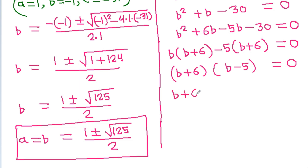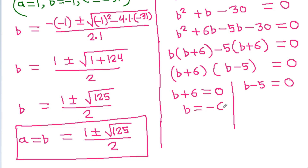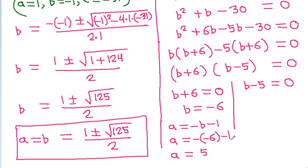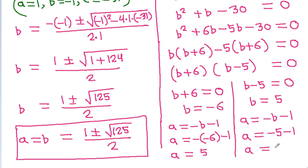So either b plus 6 equals 0, giving b equals minus 6, and then a equals minus(minus 6) minus 1 equals 6 minus 1 equals 5. Or b minus 5 equals 0, giving b equals 5, and then a equals minus 5 minus 1 equals minus 6.